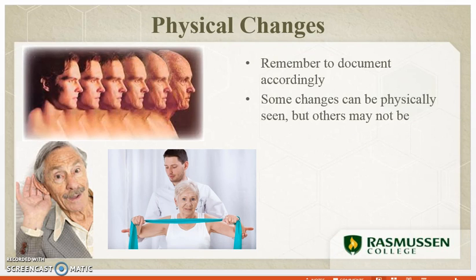With the aging process there are physical and mental changes. Physical changes relate to each and every body system. When rooming an elderly patient, you must document accordingly and report your observations to the physician for immediate evaluation. The systems you will be able to notice physically changing include the integumentary system, nervous system, sensory system, musculoskeletal system, and respiratory system.